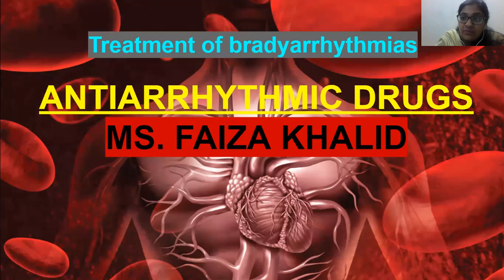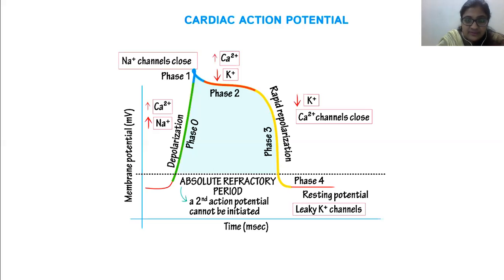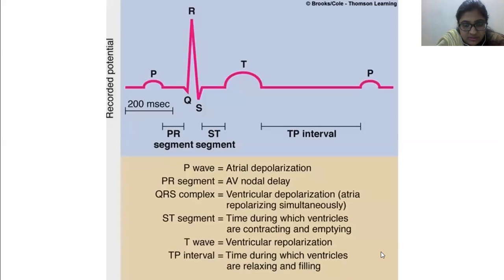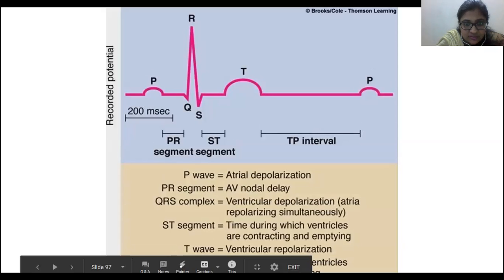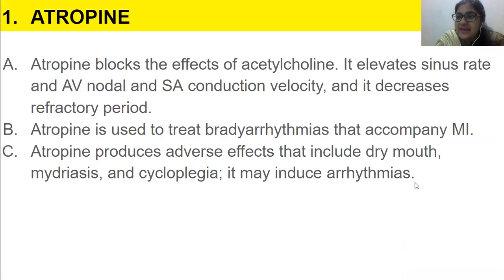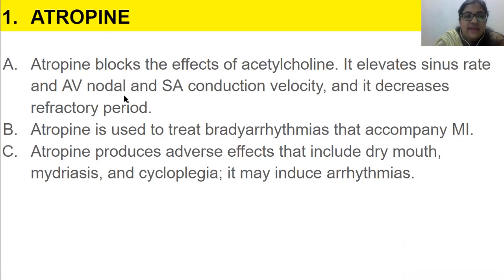Now we want to pump the heart even faster. I'm sure a lot of medicine names are going through your mind. So the first one is atropine. Atropine blocks the effects of acetylcholine — it elevates sinus rate, AV nodal and SA conduction velocity, and decreases the refractory period.